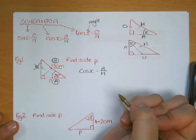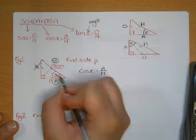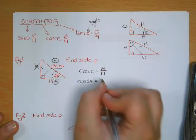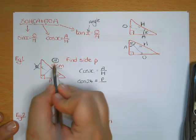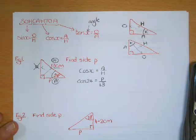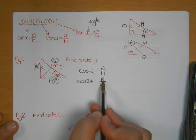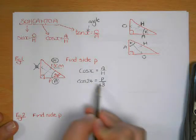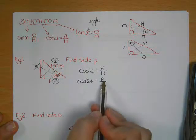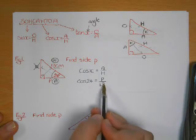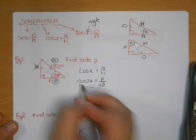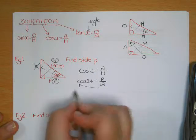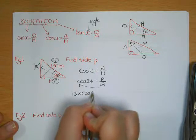Substitute in your values. X is the angle, which is 24. So we write cos 24 equals P over 13. P is being divided by 13, and we want to rearrange to find P. The opposite operation to dividing is multiplying, so 13 moves to the other side and multiplies. So 13 times cos 24 will tell us what P is.